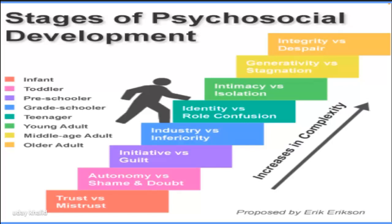Middle adulthood involves the task of Generativity versus Stagnation. If the person can create something useful — through work or family — that is generativity. If they cannot, the result is stagnation.